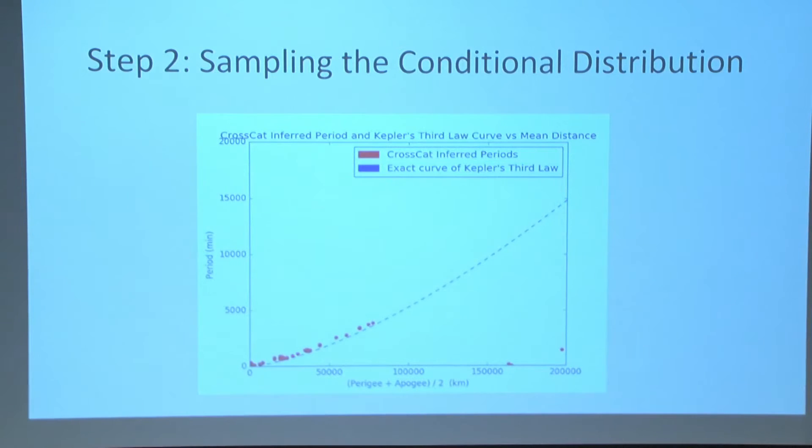The second thing I did was I sampled from a conditional distribution. So I essentially said, if I know what these two variables are, the perigee and the apogee, what will be the period? And I found that the inferred periods by my model were actually really close to the ones from Kepler's law.